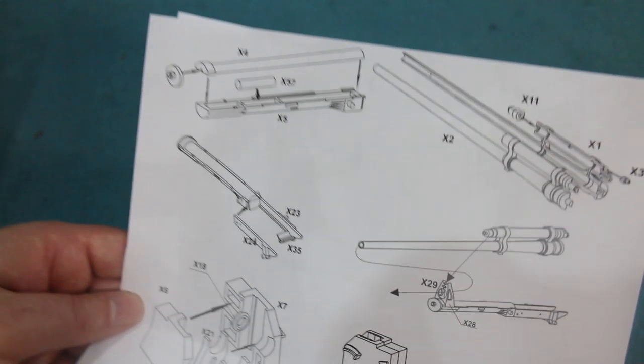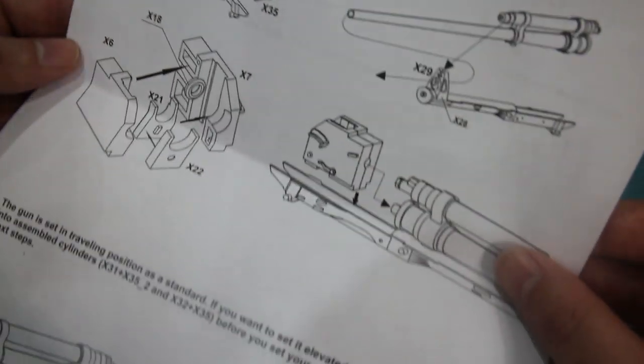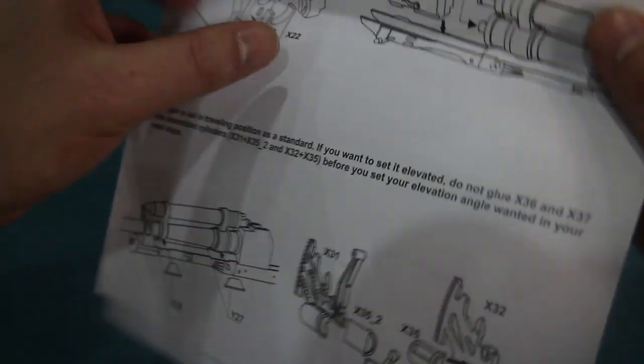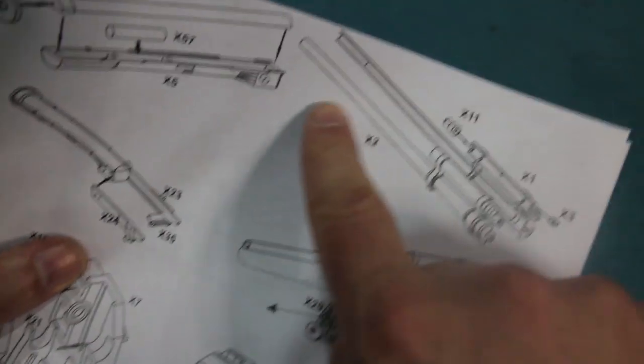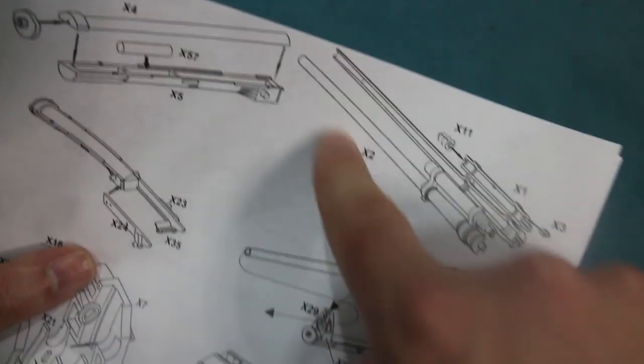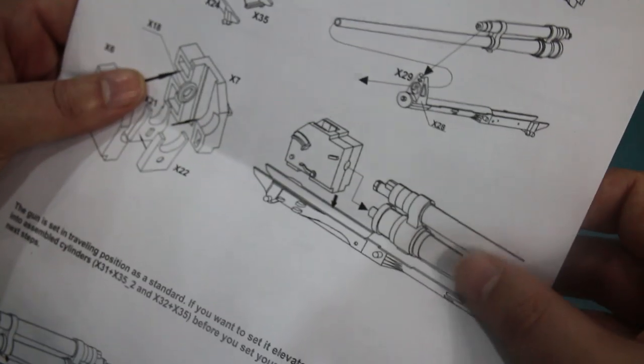Then we get on to building the gun, the business end of the vehicle. It's a fairly standard sort of construction for the gun. The barrel is in two halves so that's probably something you'll want to get an aftermarket part for, which indeed you can do.